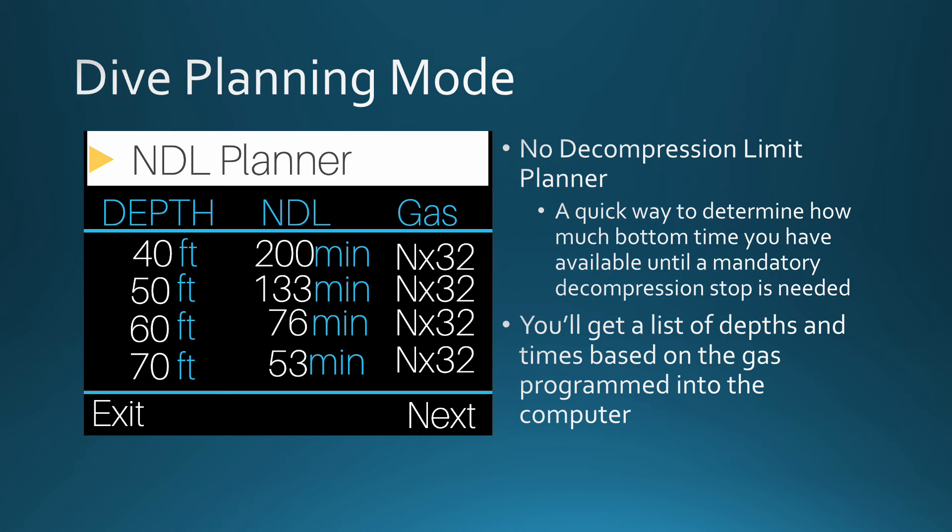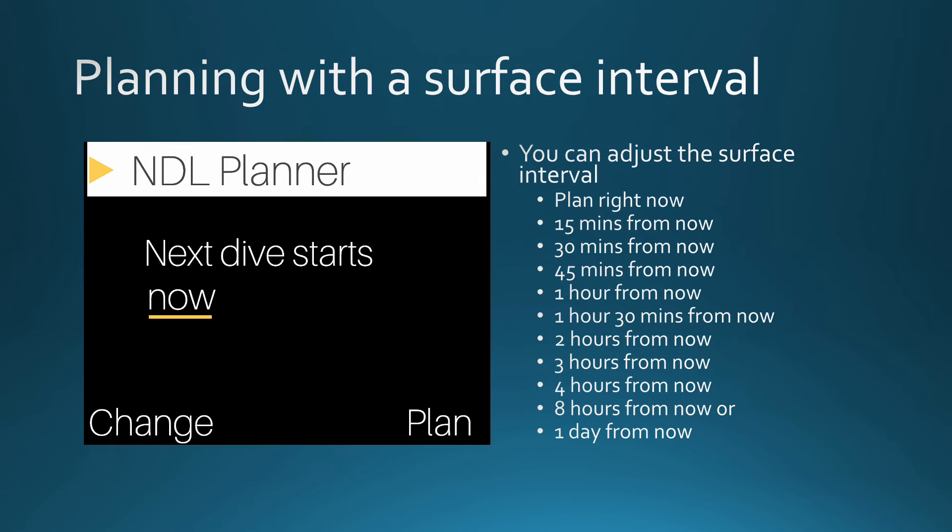The NDL planner is accessed from the dive setup selection. You will get a list of no decompression limits based on the gas you are breathing — in this case, we are seeing the times associated with Nitrox 32. When you first enter the NDL planner, it will ask you when you want to start your next dive. This is a great tool if you are sitting on the boat and want to know how much no decompression time you will have 30 minutes from now. You can plan right now or adjust it from 15 minutes all the way up to one day. When you adjust this setting, the NDL list will be calculated with the time added to your surface interval.